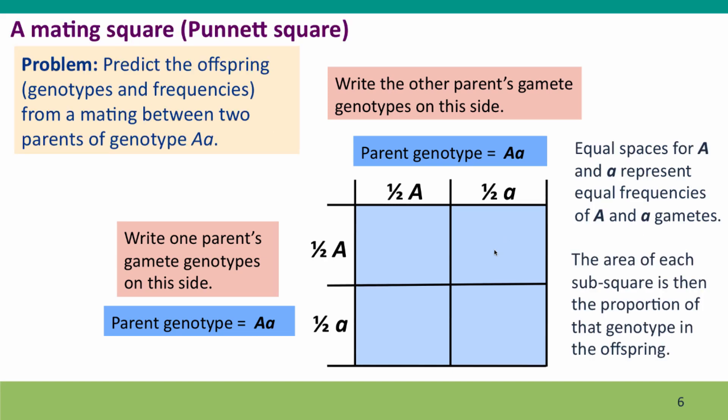This square also indicates proportions because by giving equal spaces to the compartments on the sides and the top, we remind ourselves that the gametes are going to be present in equal proportions, equal proportions of big A and little a. That means we can then use the area of the squares that contain the offspring genotypes as measures of the proportion of each of those genotypes.